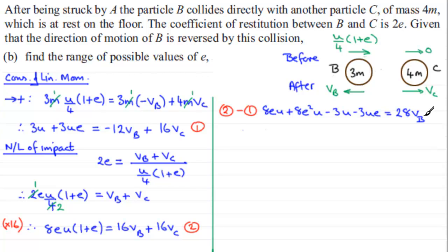If I divide both sides by 28 to make VB the subject and tidy up these terms, we've got 8E squared U plus 5EU minus 3U divided by 28.